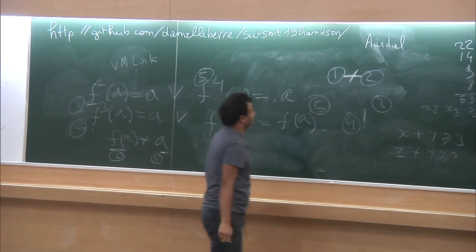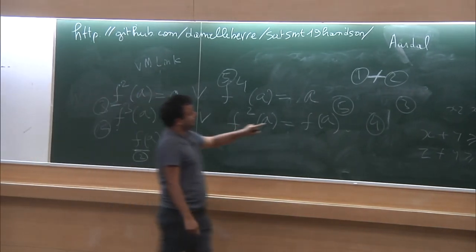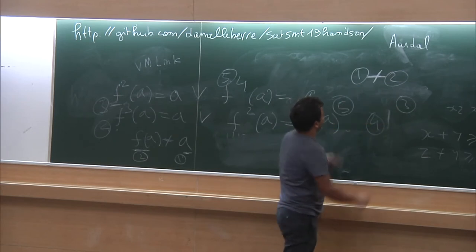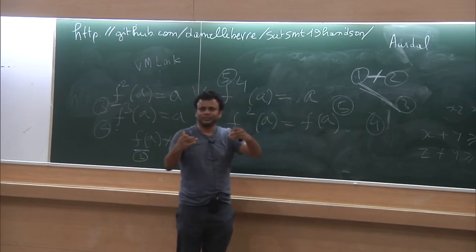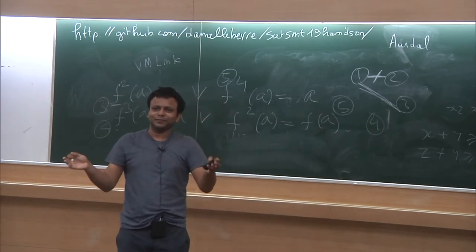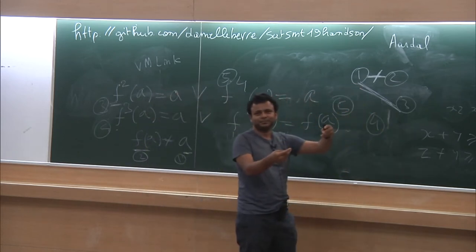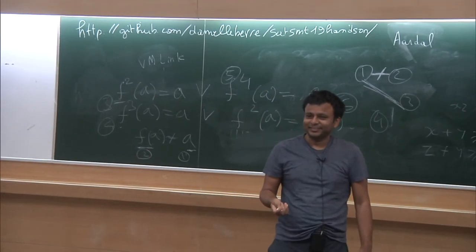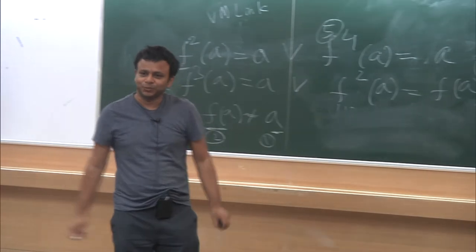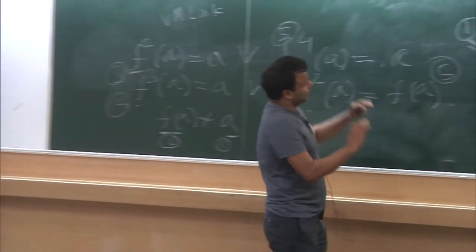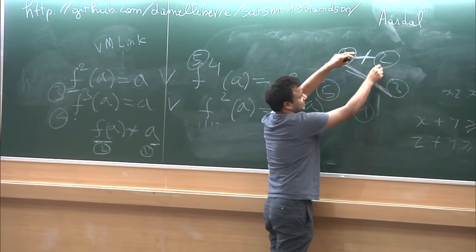Applying f on both equal terms produces two more equal terms. If you apply f again on those, you get another equality. But you also need f cubed of a equals a. Since f cubed is already equal to a through this chain, that edge is already established. By this chain of equalities, a path is created between the relevant nodes, and that is how the equality reasoning works.